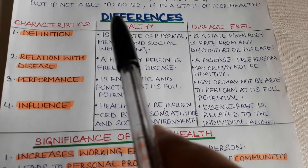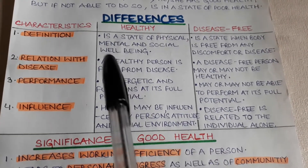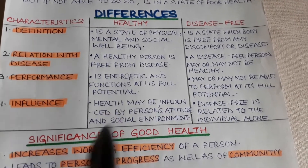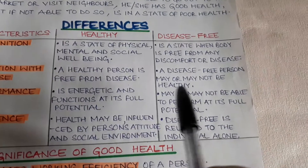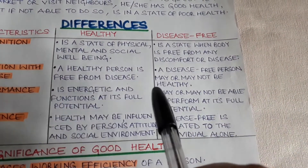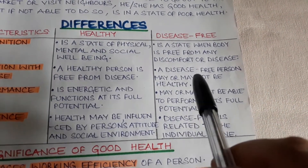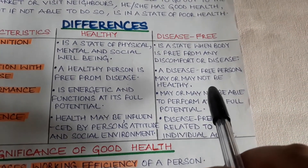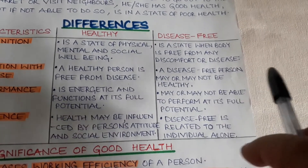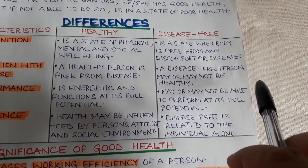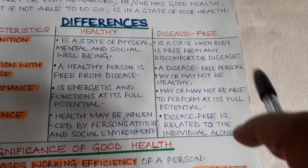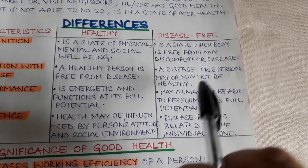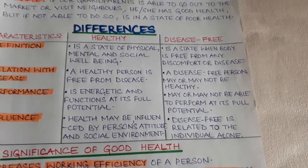A healthy person means good physical health, mental health, as well as social health, so a healthy person is always free from disease. Whereas a disease-free person may or may not be healthy — disease free means having good physical health, but it does not necessarily mean being in a state of good social or mental health. If so, the disease-free person is healthy; if not, the disease-free person is not healthy.